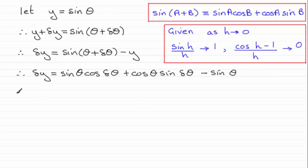And the next thing I'm going to do is factorize the first term here and the last term here by putting out sine theta as a common factor between both of them. So we end up with sine theta times all of cosine delta theta.